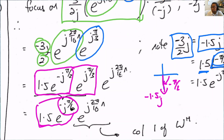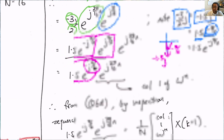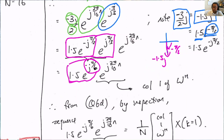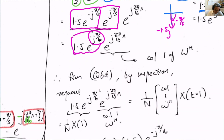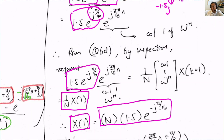The sequence e^(j·2π/16·n) remains, and we recognize this as column 1 of the DFT matrix W_H. From question 6d, we recognize that the coefficient 1.5·e^(-jπ/6) equals (1/N)·X[1], and therefore X[1] = N × 1.5·e^(-jπ/6).